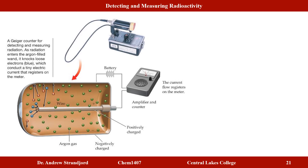The most common way to measure radiation is a Geiger counter. It consists of a container filled with argon gas with a positively charged inner electrode and a negatively charged outer metal container. When radiation enters the tube, it knocks loose electrons from the negatively charged system, which then hit the positive electrode and create a detectable current measured on a meter.